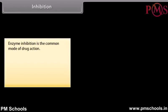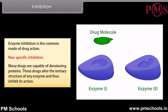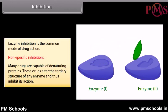Enzyme inhibition is the common mode of drug action. Non-specific inhibition: Many drugs are capable of denaturing proteins. These drugs alter the tertiary structure of an enzyme and thus inhibit its action. For example, heavy metal salts, alcohol, formaldehyde, and phenol inhibit enzymes non-specifically.